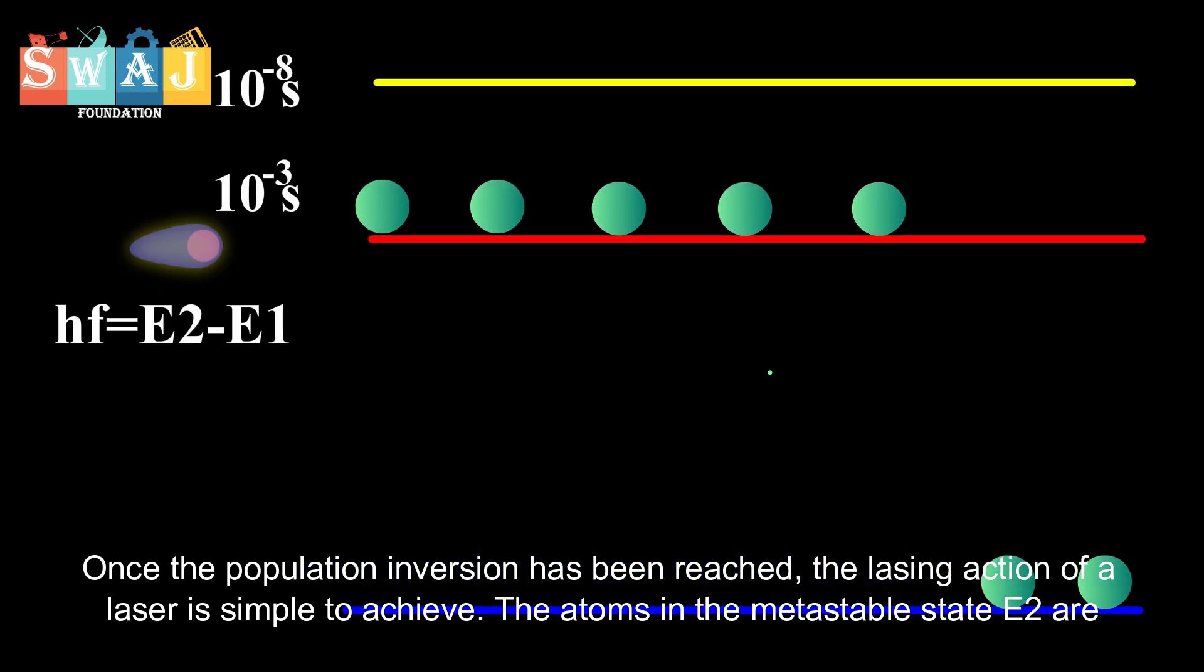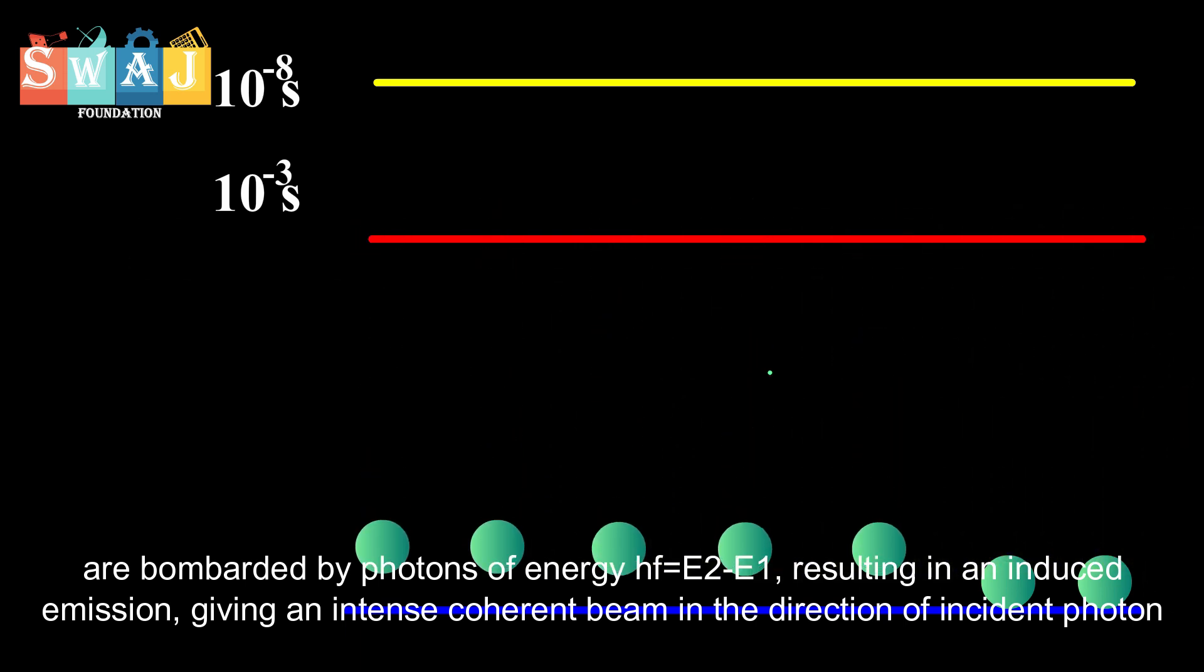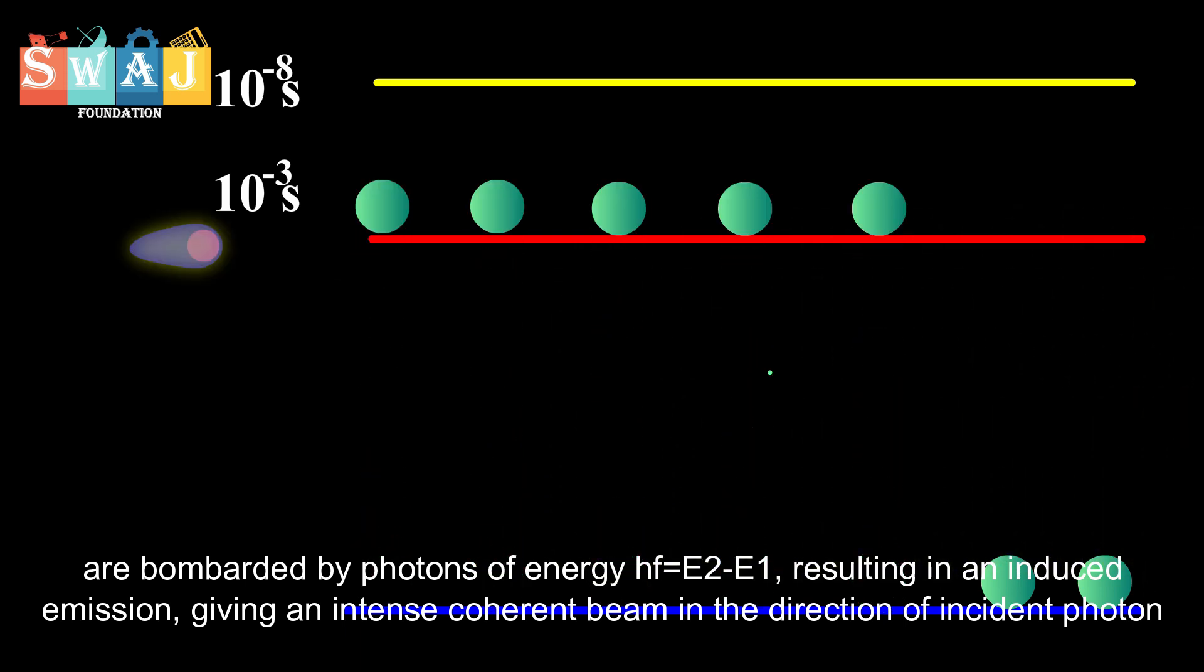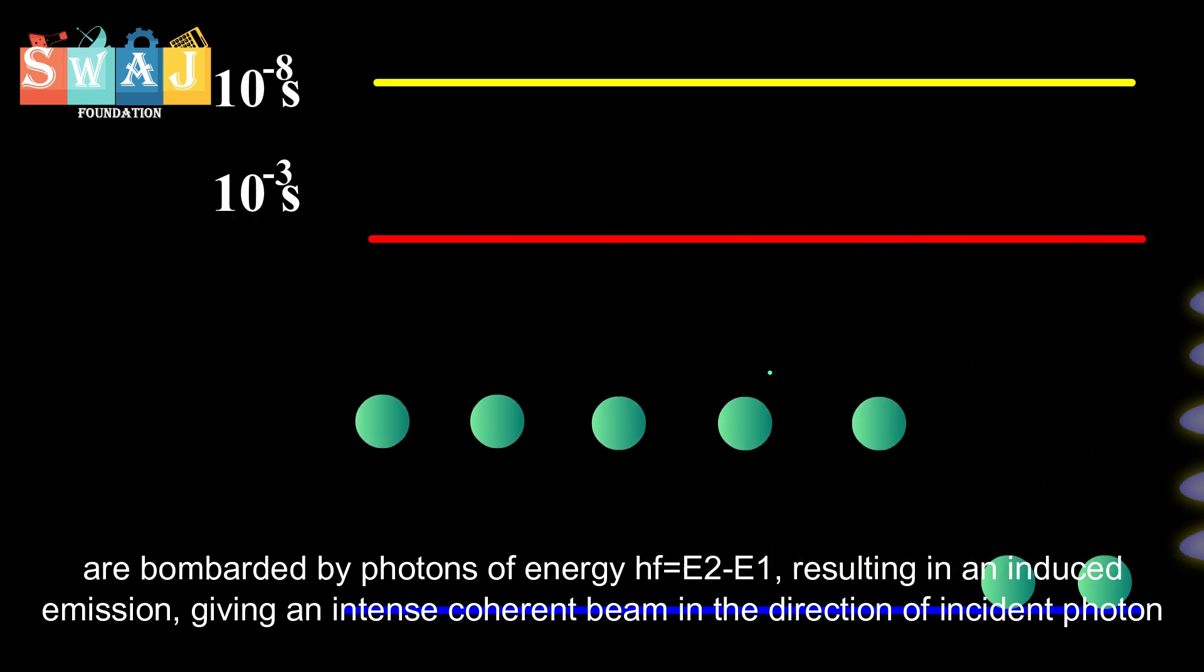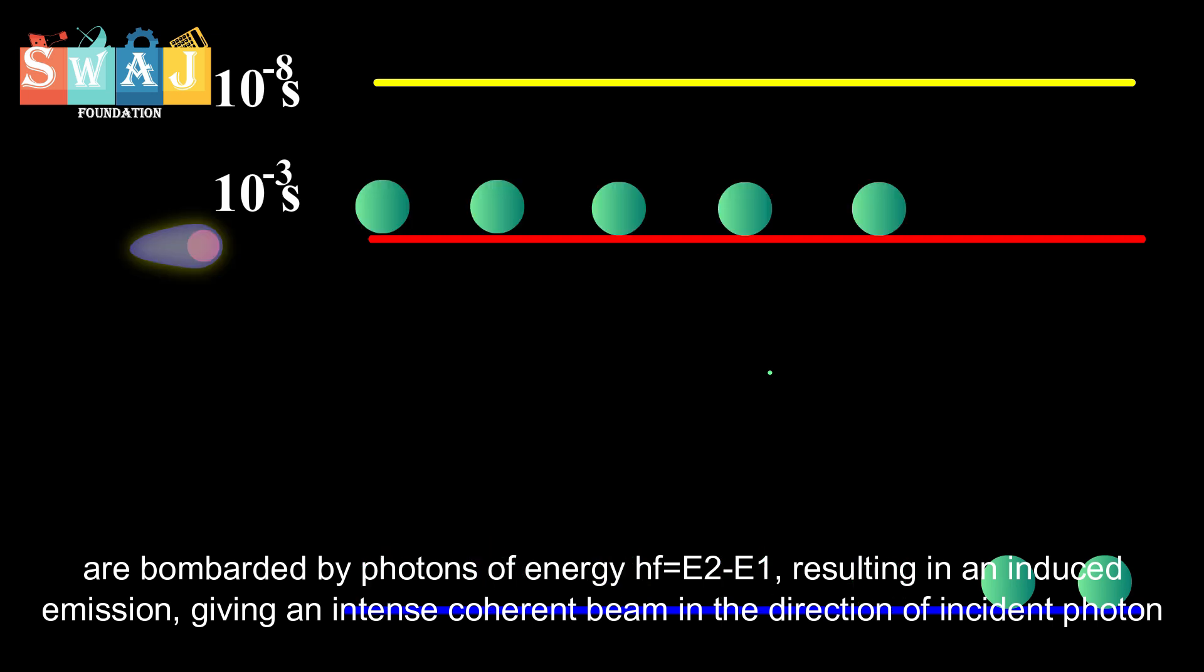The atoms in the metastable state E2 are bombarded by photons of energy hf equals E2 minus E1, resulting in an induced emission, giving an intense coherent beam in the direction of the incident photon.